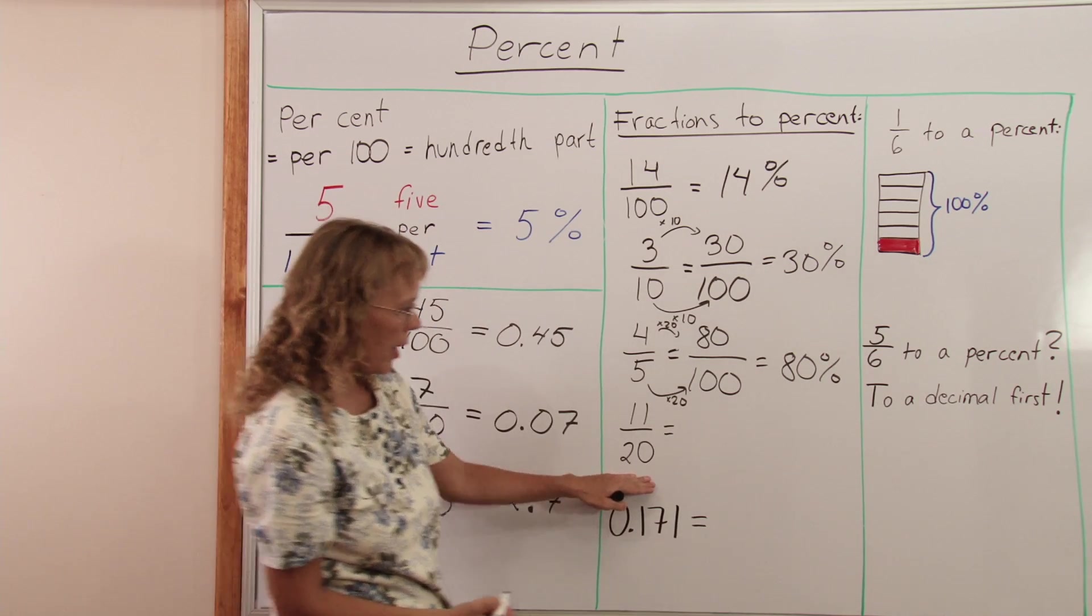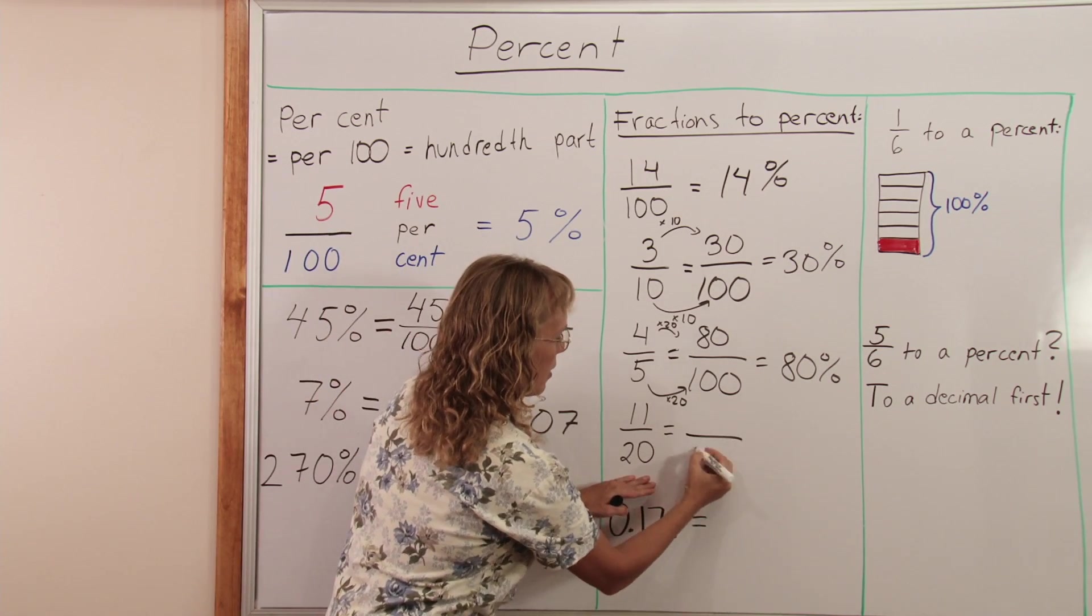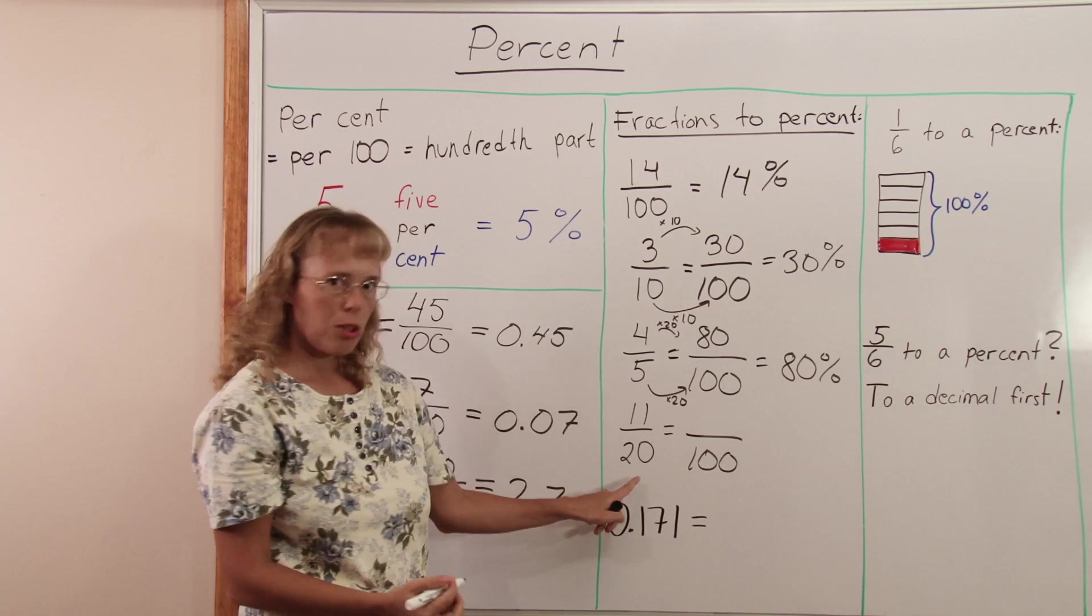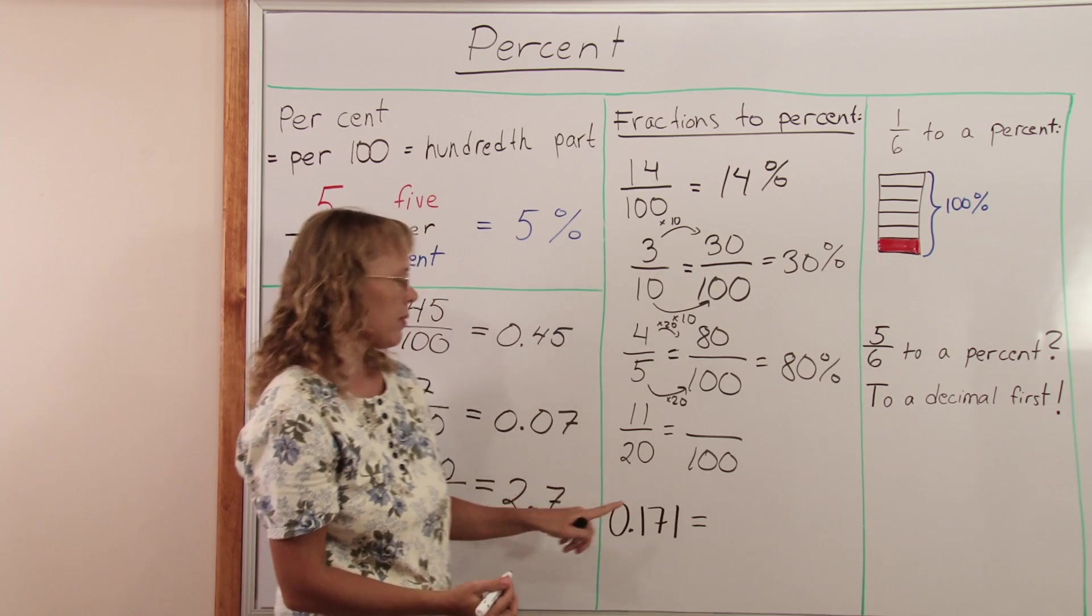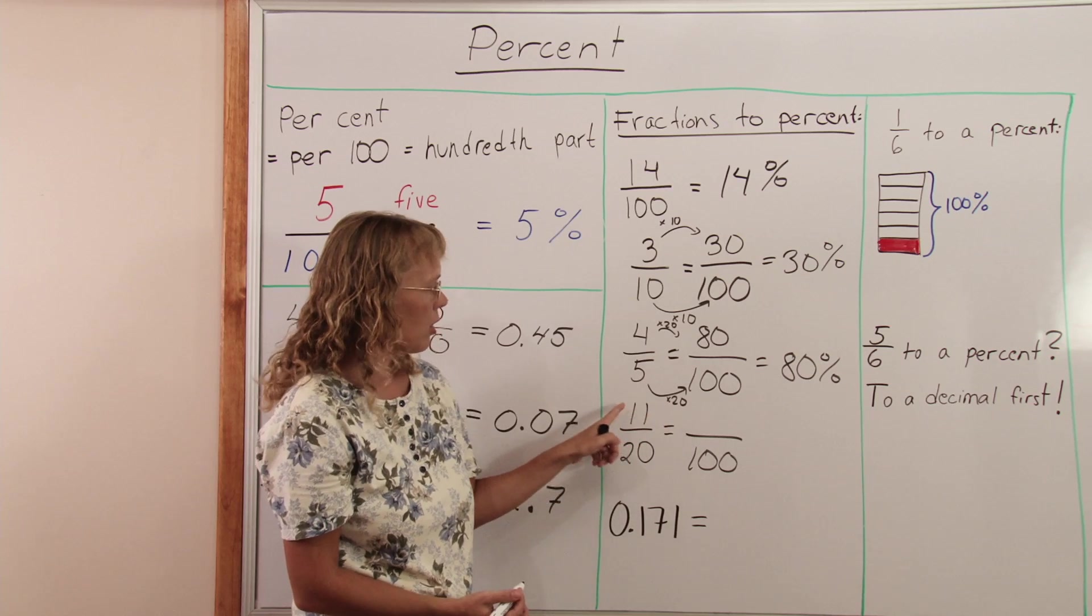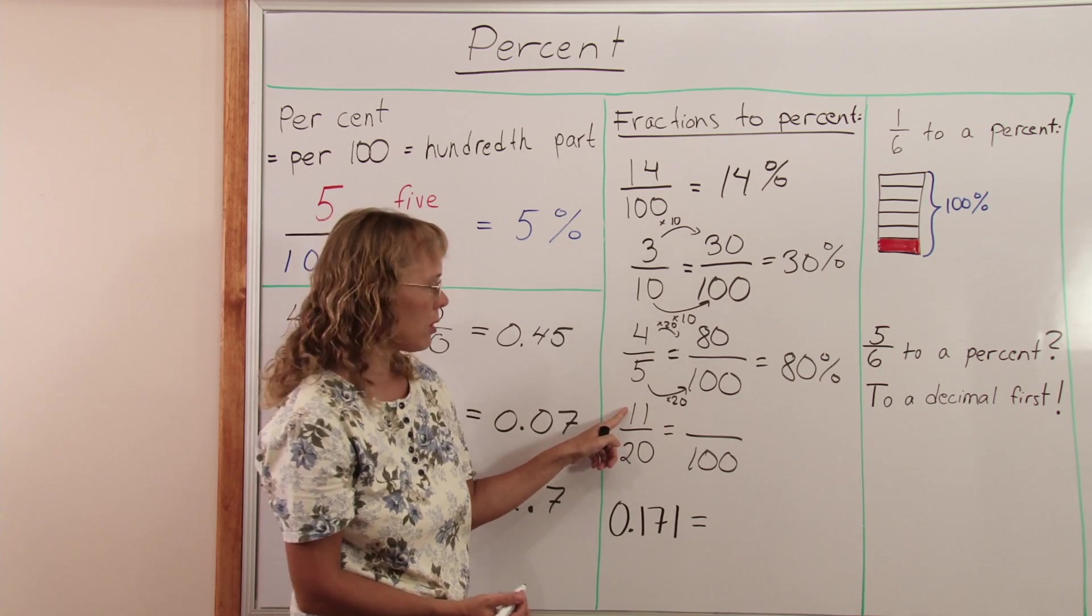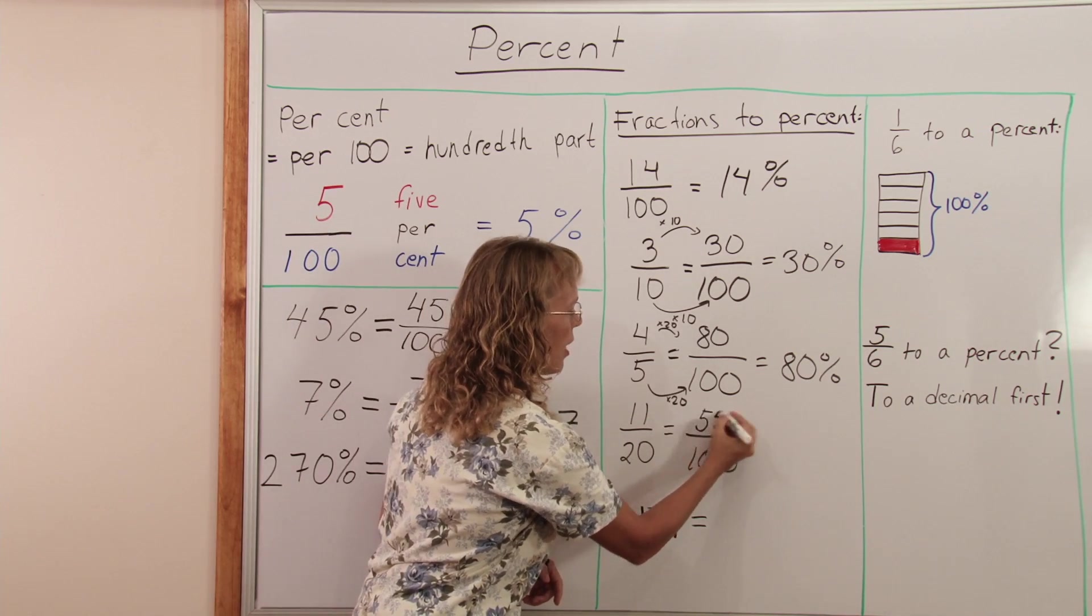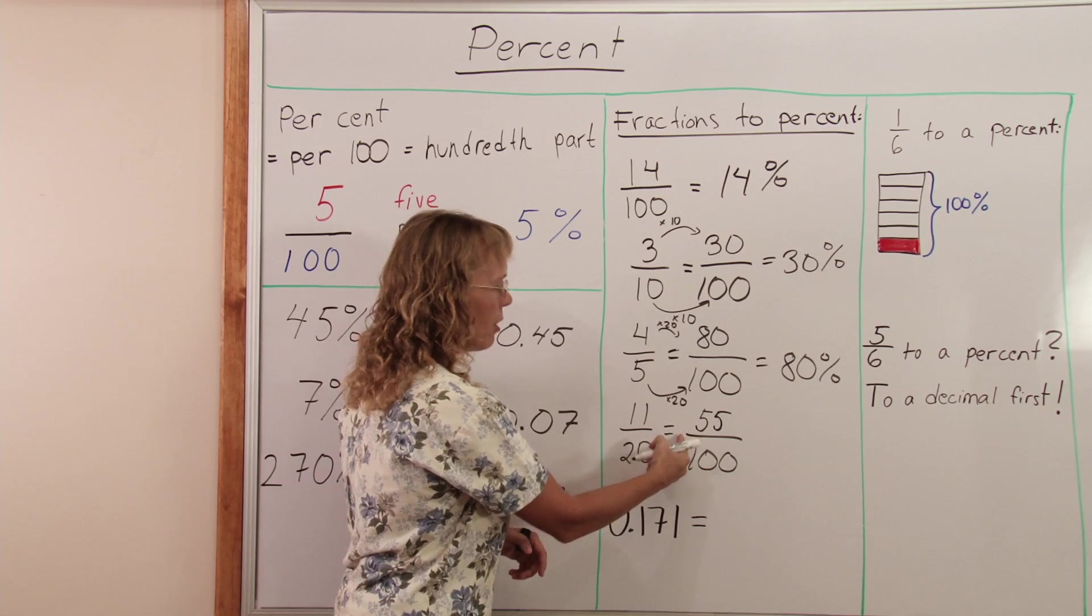This one works the same way because 20 goes evenly to 100. So 20 goes to 100 five times. So I multiply this by 5 too. I get 55 over 100 or 55 percent.